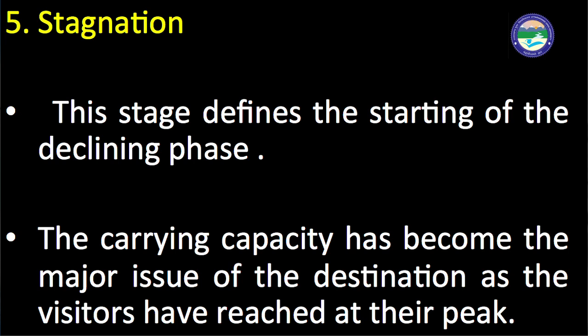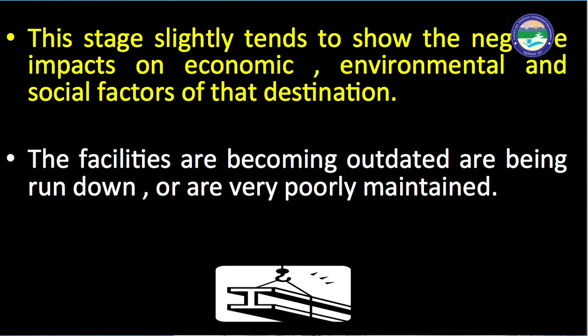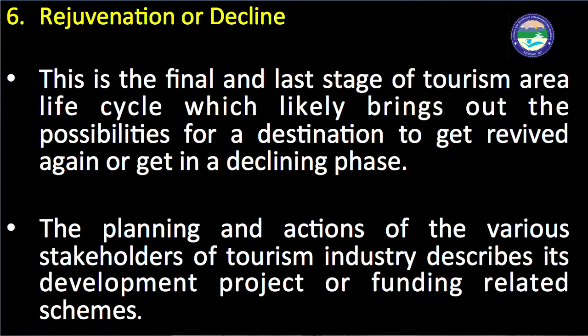The fifth stage is the stagnation stage, which defines the beginning of the declining phase. Carrying capacity has become a major issue as visitors have reached their peak level. The destination may no longer attract tourists and no longer becomes desirable. This stage tends to show negative impacts on economic, environmental, and social factors of that destination, and facilities are becoming outdated, rundown, or very poorly maintained.